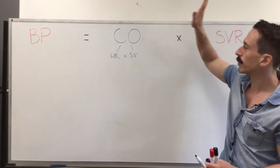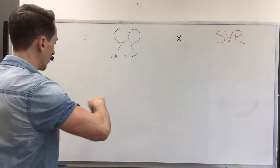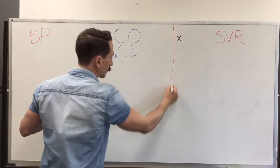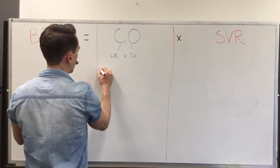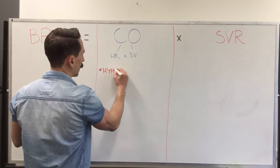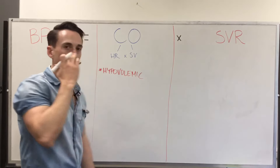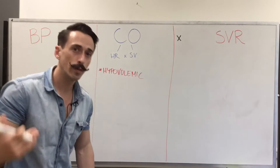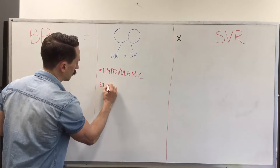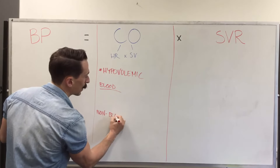Now let's break up the different types of shock. First, I'm going to talk about shock that sits underneath cardiac output. The first type is hypovolemic shock. Hypo means below, volemic means volume — this is saying that the circulating fluid volume of the body is reduced. This could be blood or non-blood volume, such as plasma for example.